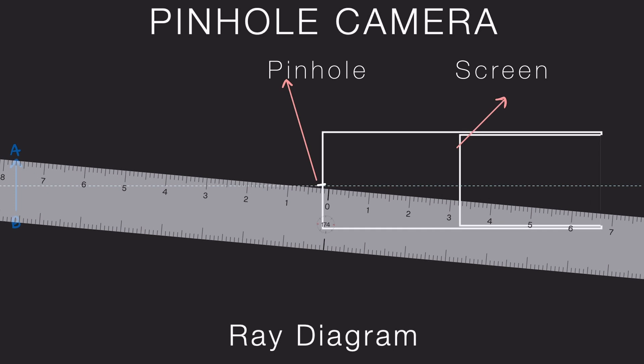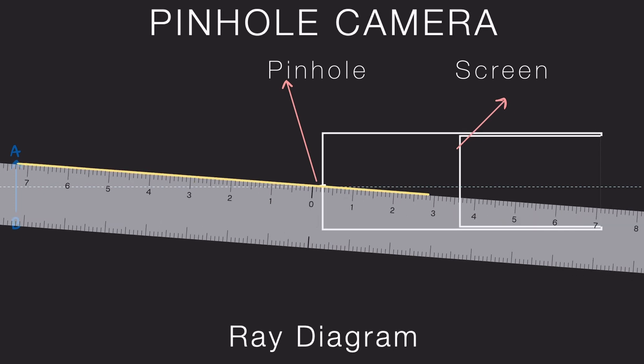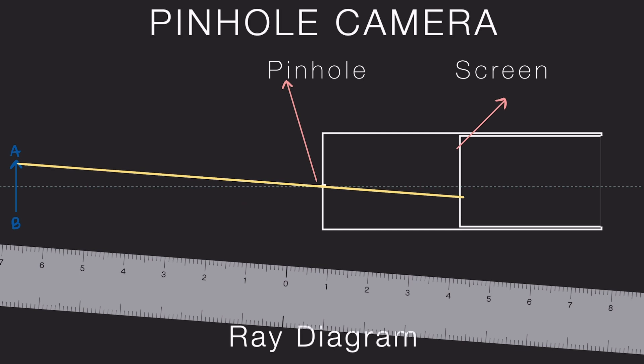The first ray I'm choosing starts from point A at the top. A ray of light from A passes straight through the pinhole. Light travels in straight lines, so we draw this ray straight through the pinhole onto the screen.